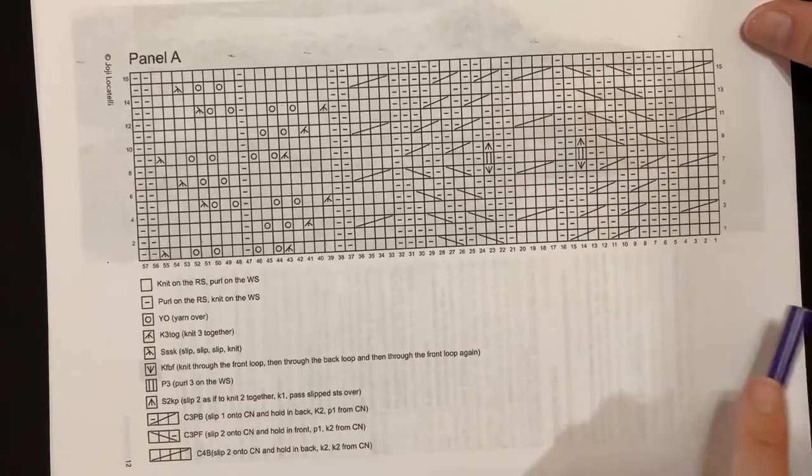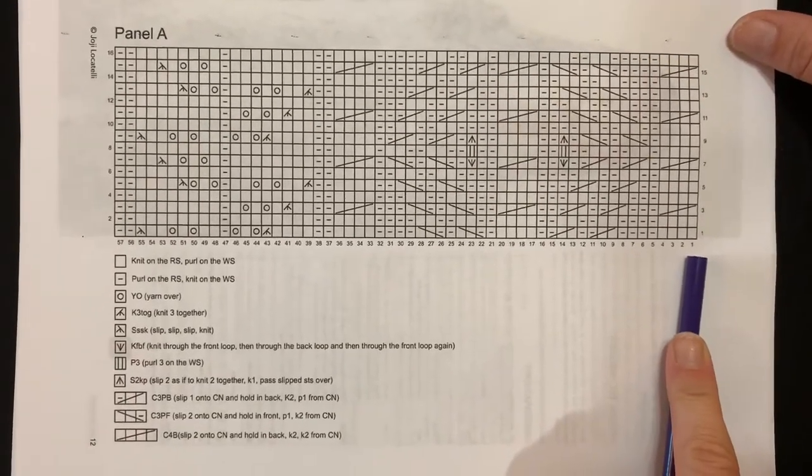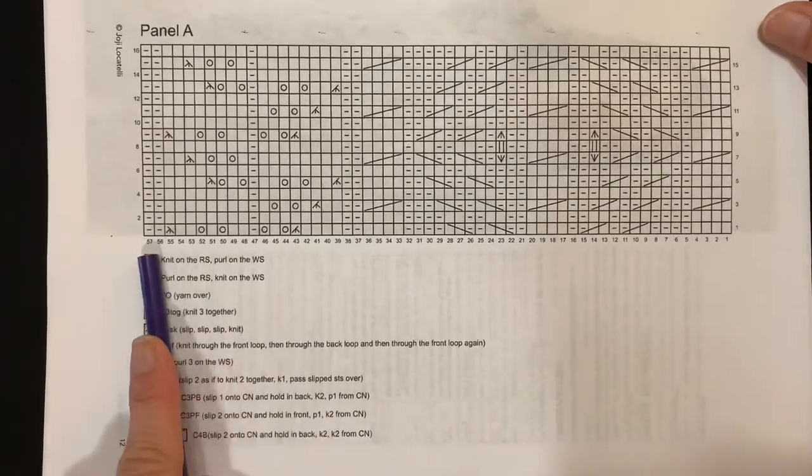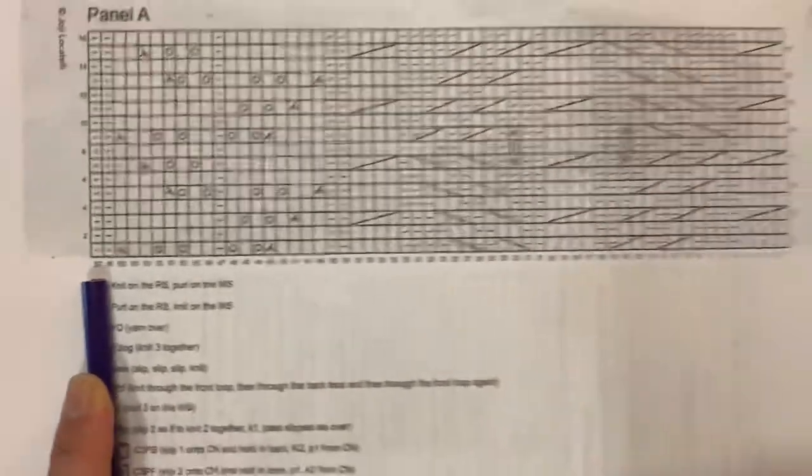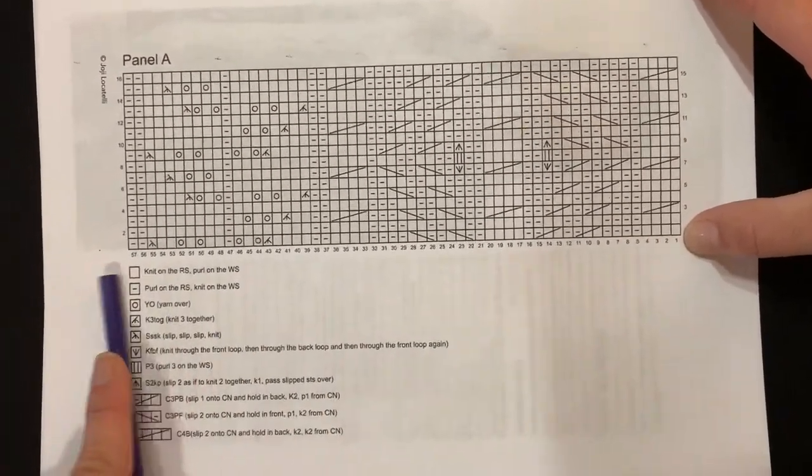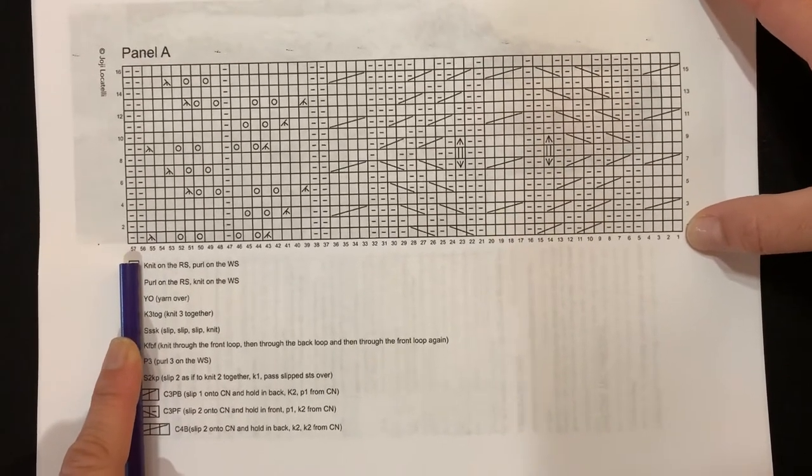And they start over here on the right with number one, and they go all the way across to number 57. So whether you are repeating the chart once, twice, or three times across your knitting, you will repeat from number one to number 57, unless of course the instructions say otherwise elsewhere.